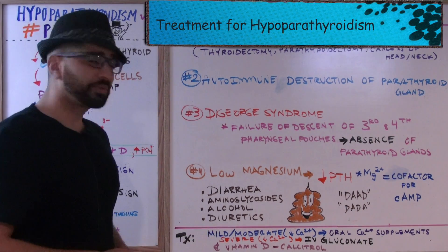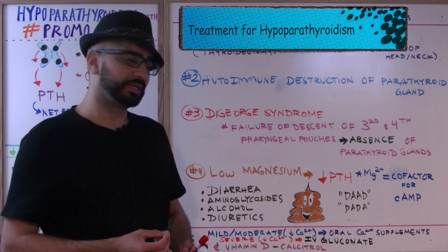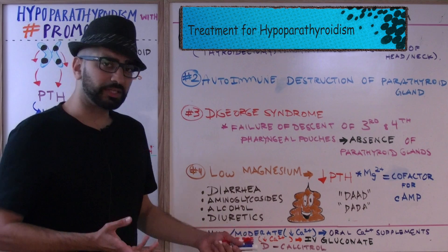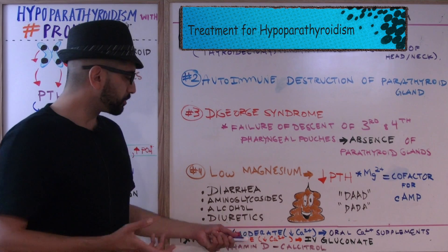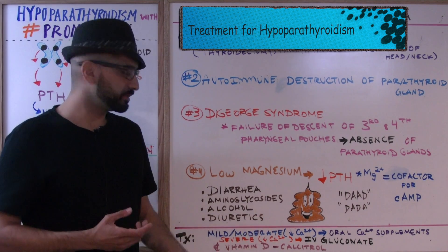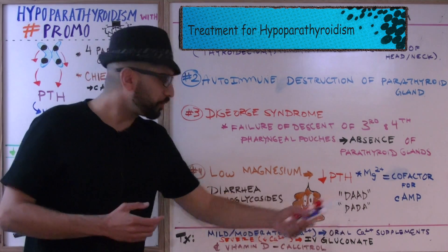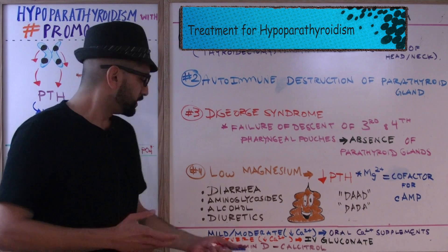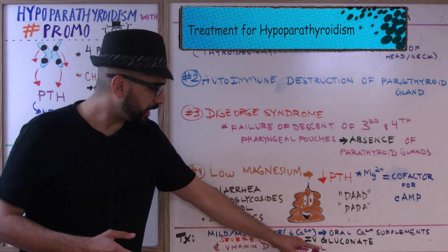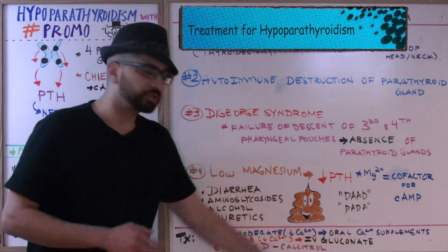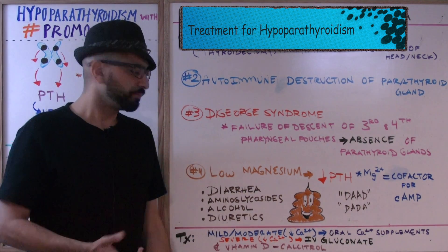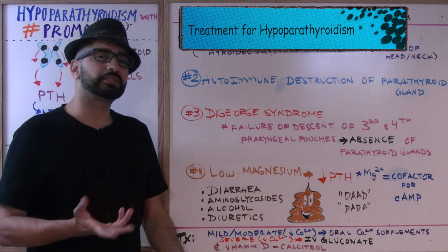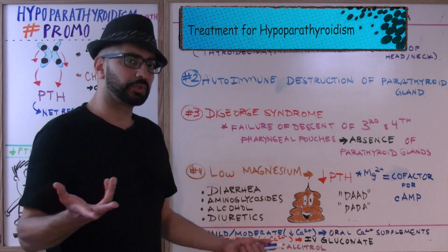Finally, let's briefly discuss treatment. For mild or moderate cases of low calcium, we give oral calcium supplements. For severe cases, we give IV calcium gluconate — remember that. You can also add vitamin D or calcitriol supplements as well.